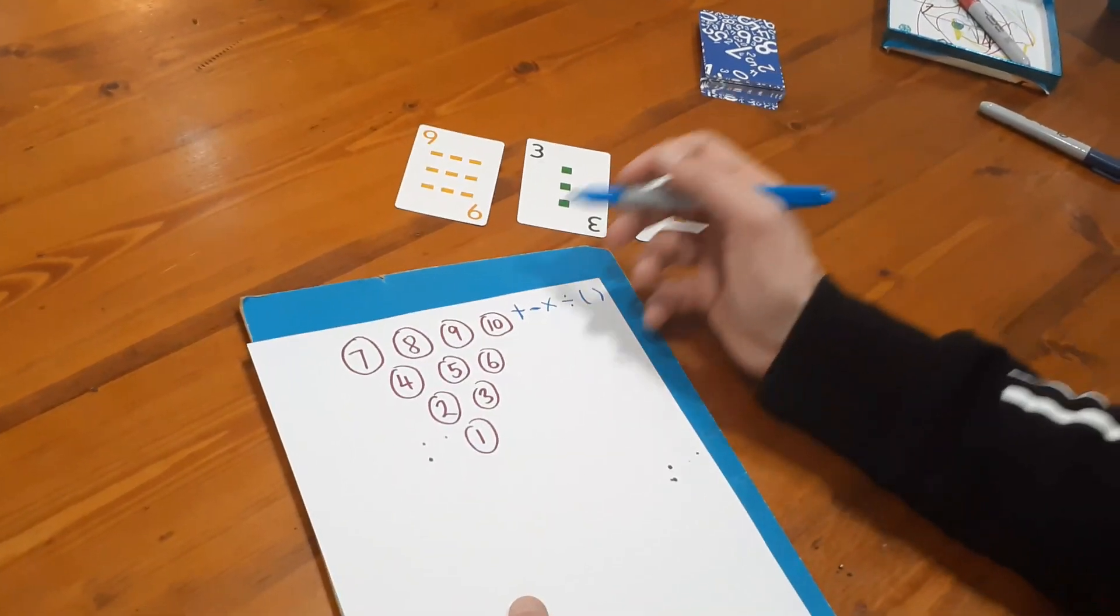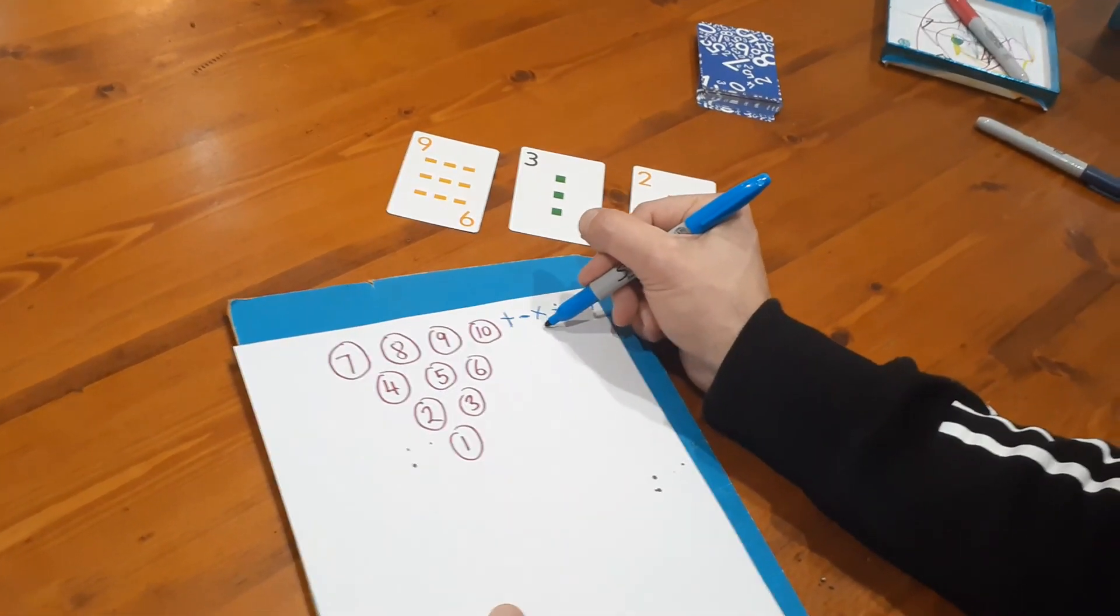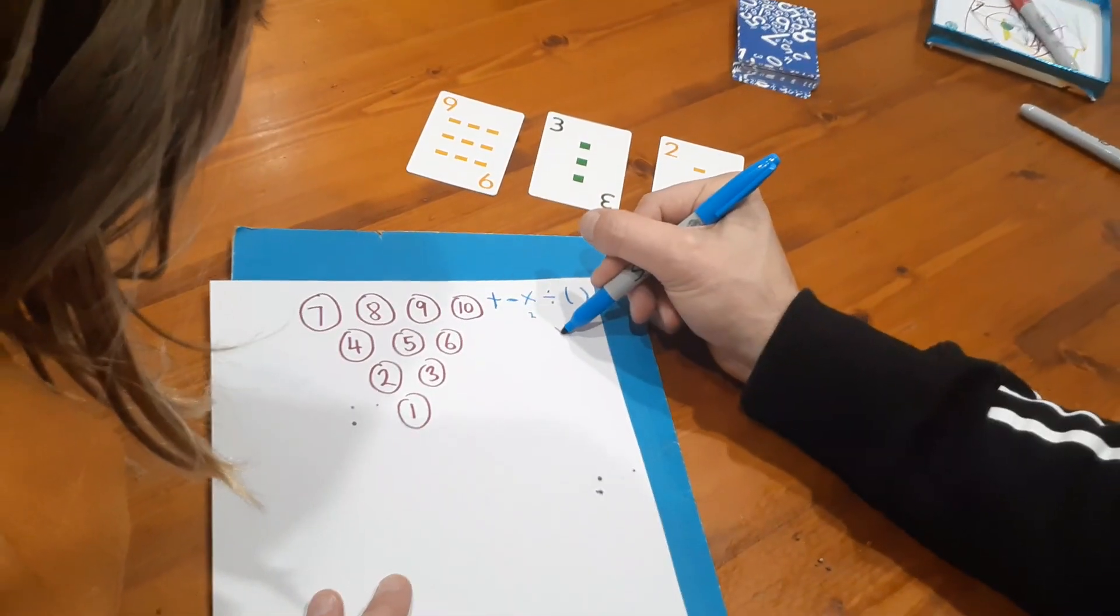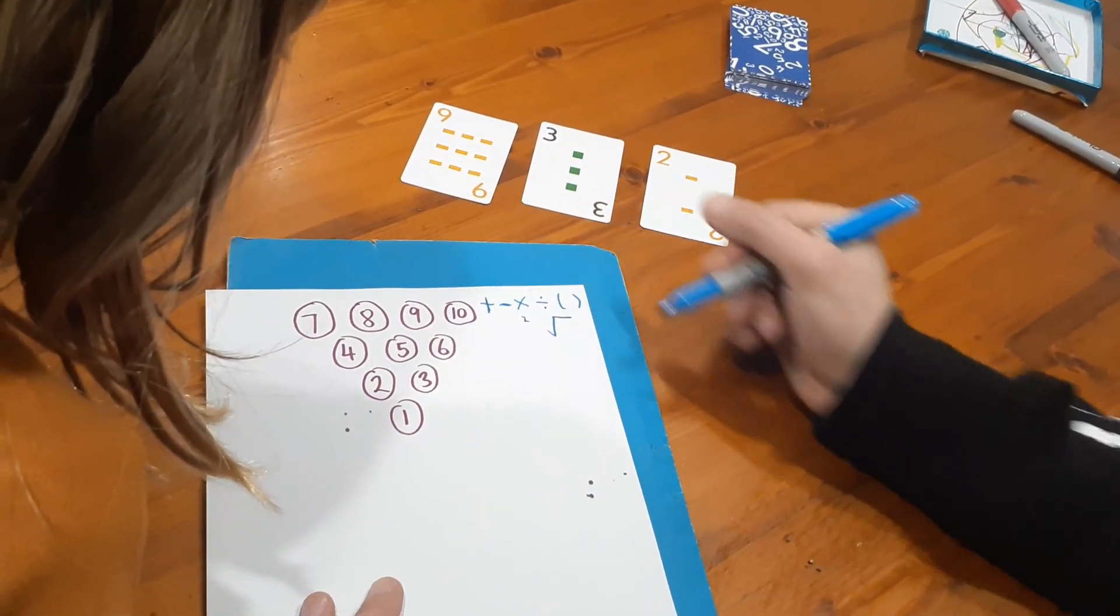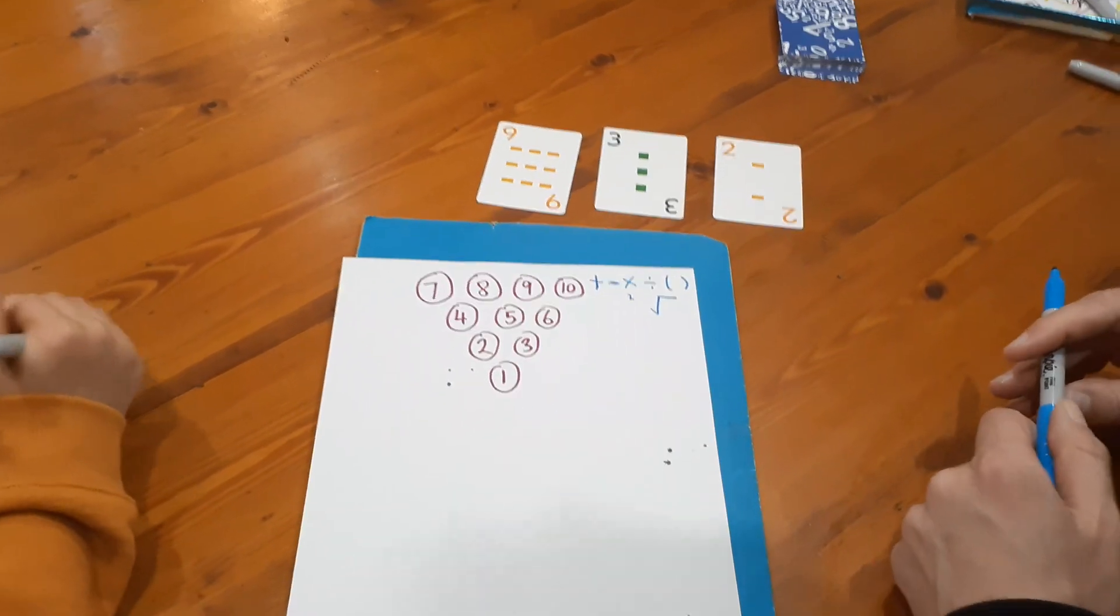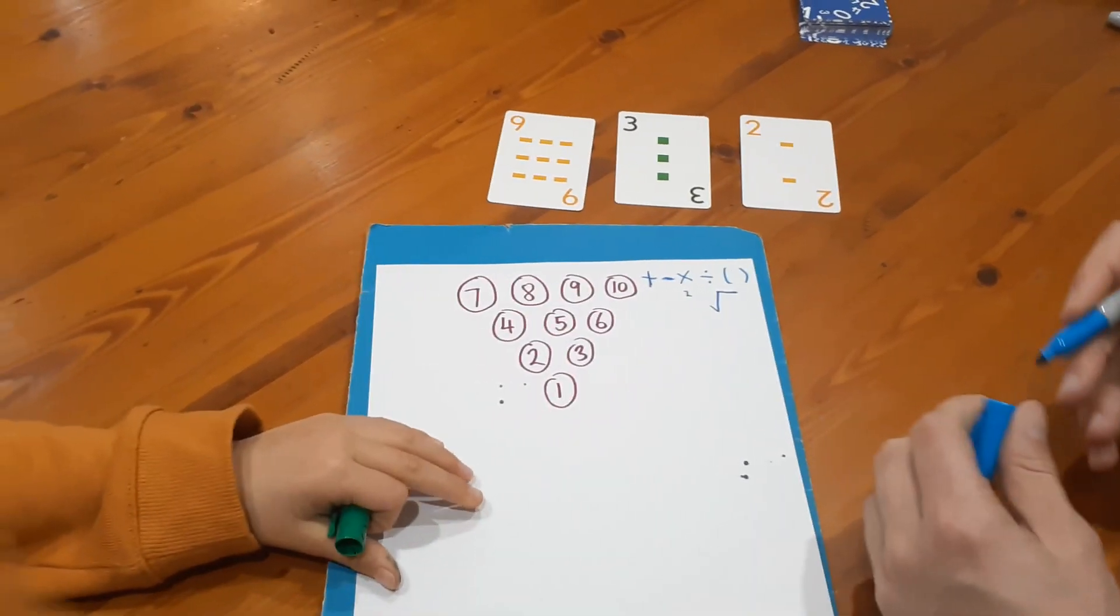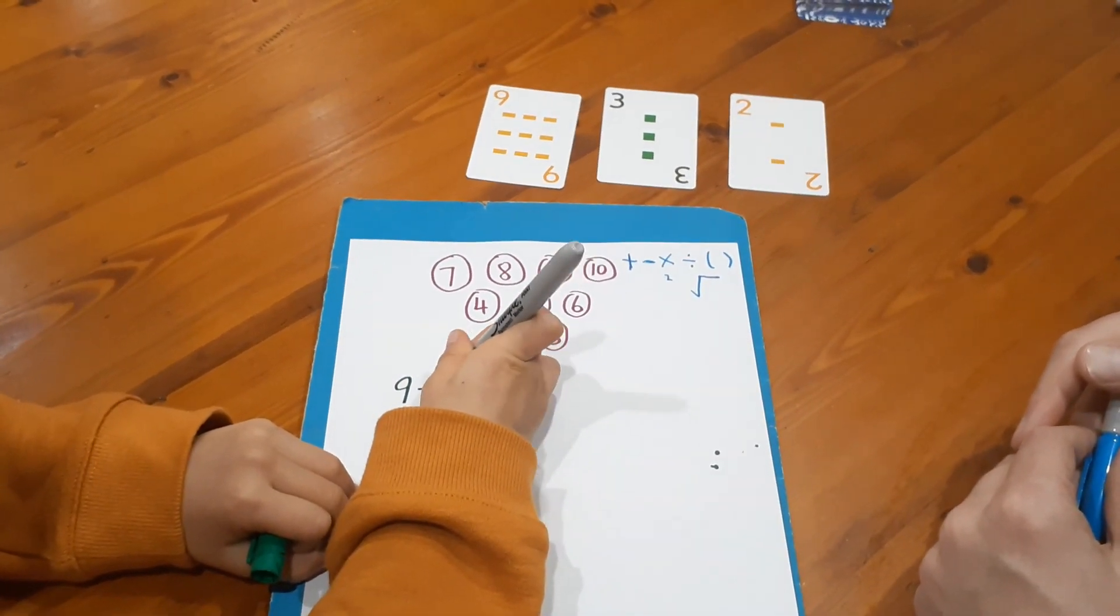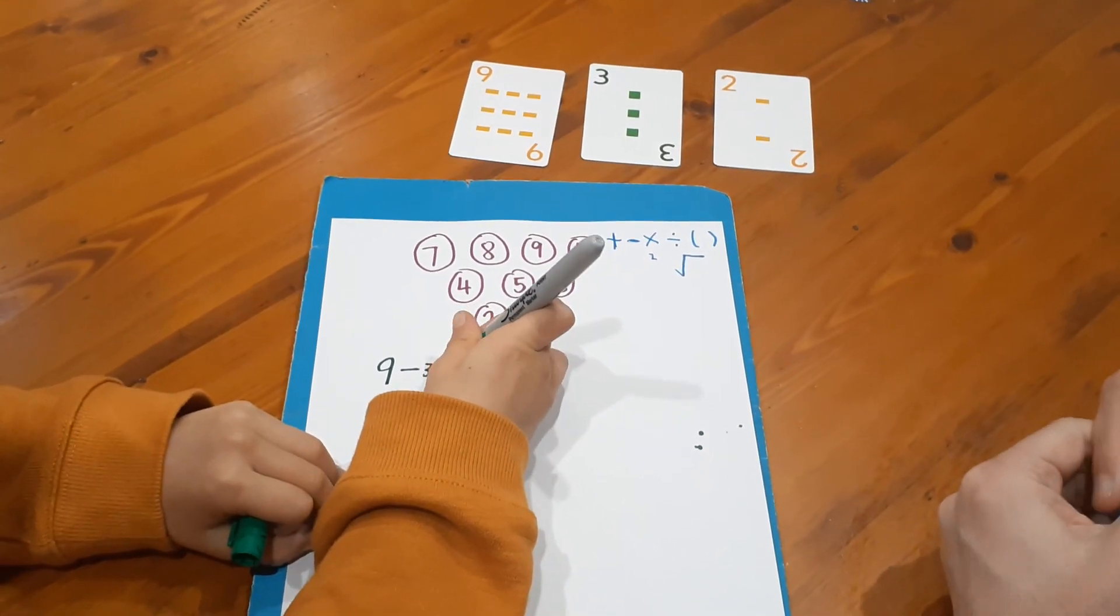In this example we've got a two, so we could use a square number if we wanted to, and we can also use square roots if that helps us. Alright, now see if you've got one ready to go. Nine take away three. Should I write it down? Nine take away three equals six.